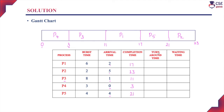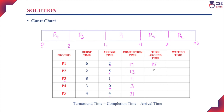Next, we need to identify the turnaround time. Turnaround time is the time interval between when the process enters the ready queue and when it completes execution. The formula is: turnaround time = completion time minus arrival time. For P1: 17 minus 2 equals 15. For P2: 23 minus 5 equals 18. For P3: 11 minus 1 equals 10. For P4: 3 minus 0 equals 3. For P5: 21 minus 4 equals 17.